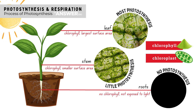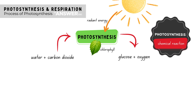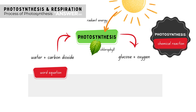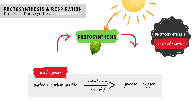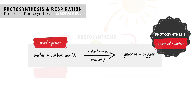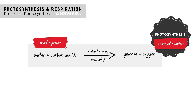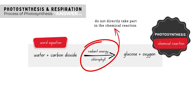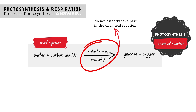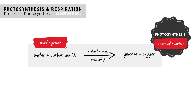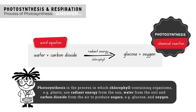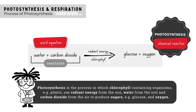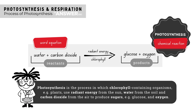Because photosynthesis is a chemical reaction, we can write a chemical word equation for the reaction: water and carbon dioxide are converted into glucose and oxygen, with the use of radiant energy from the sun and chlorophyll in chloroplasts. Notice that chlorophyll and radiant energy are not written as reactants, because even though they are required for photosynthesis, they don't directly take part in the chemical reaction — they are only there to activate it. Photosynthesis is the process in which chlorophyll-containing organisms, for example plants, use radiant energy from the sun, water from the soil, and carbon dioxide from the air to produce sugars, for example glucose, and oxygen.